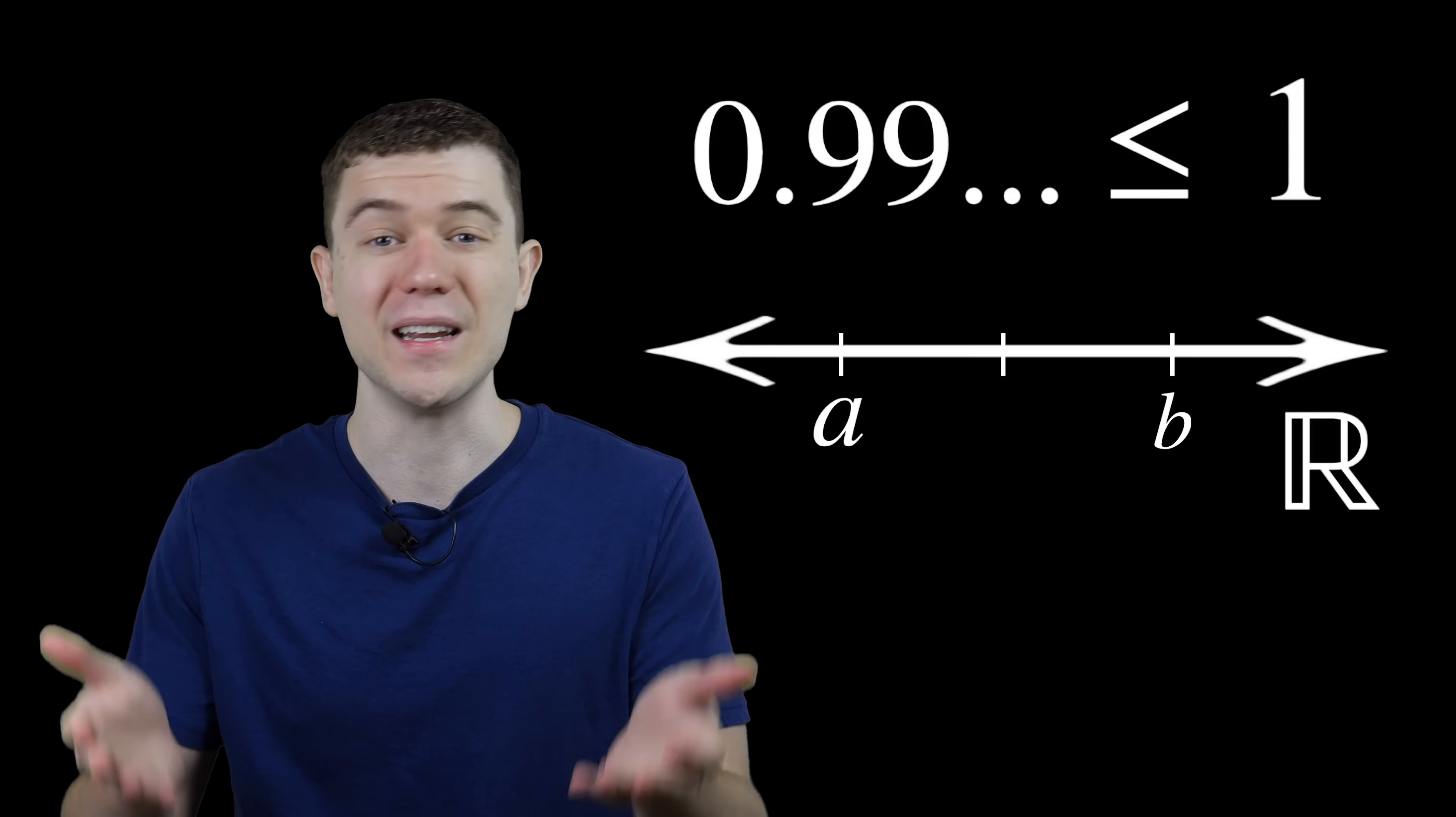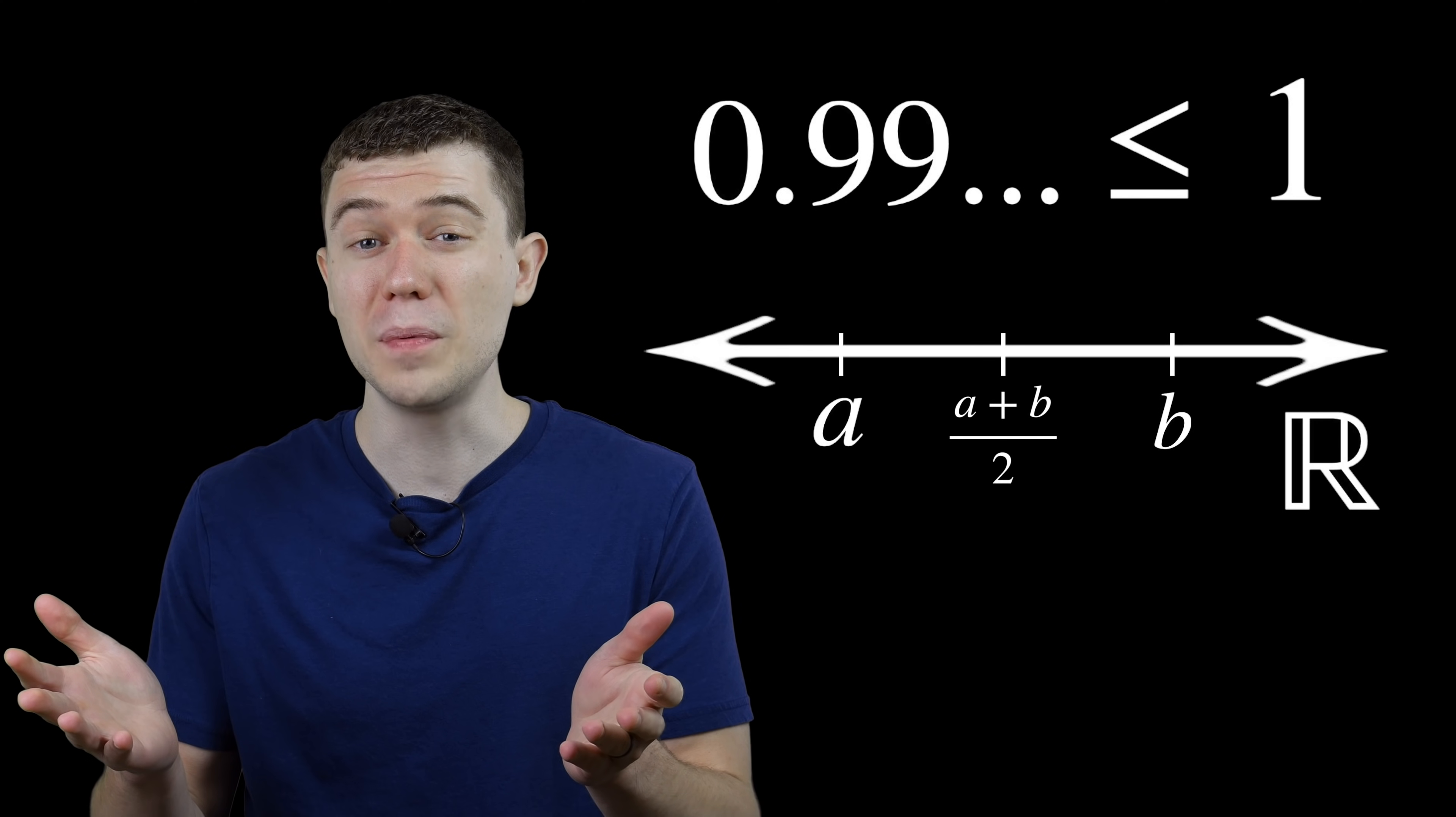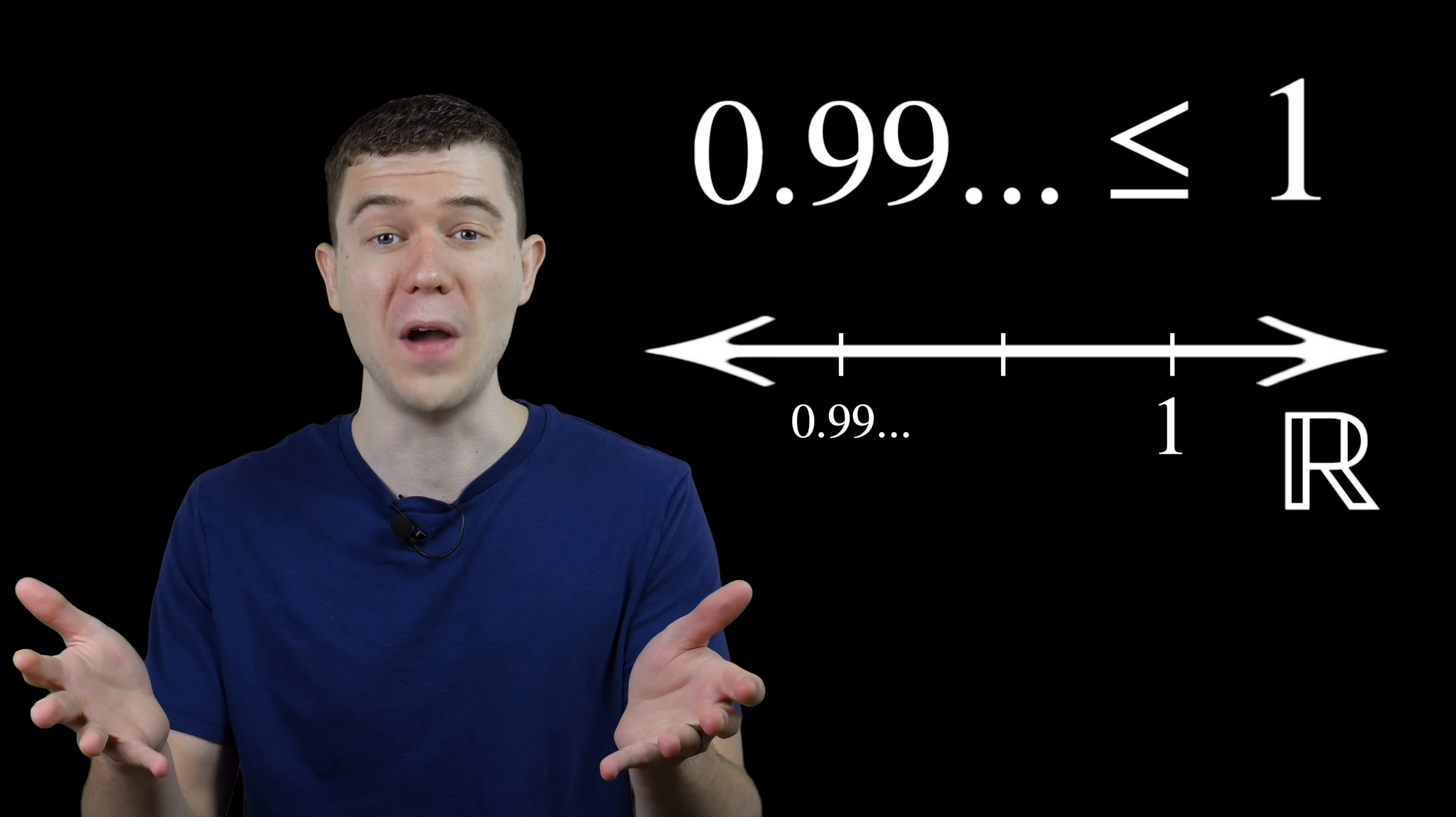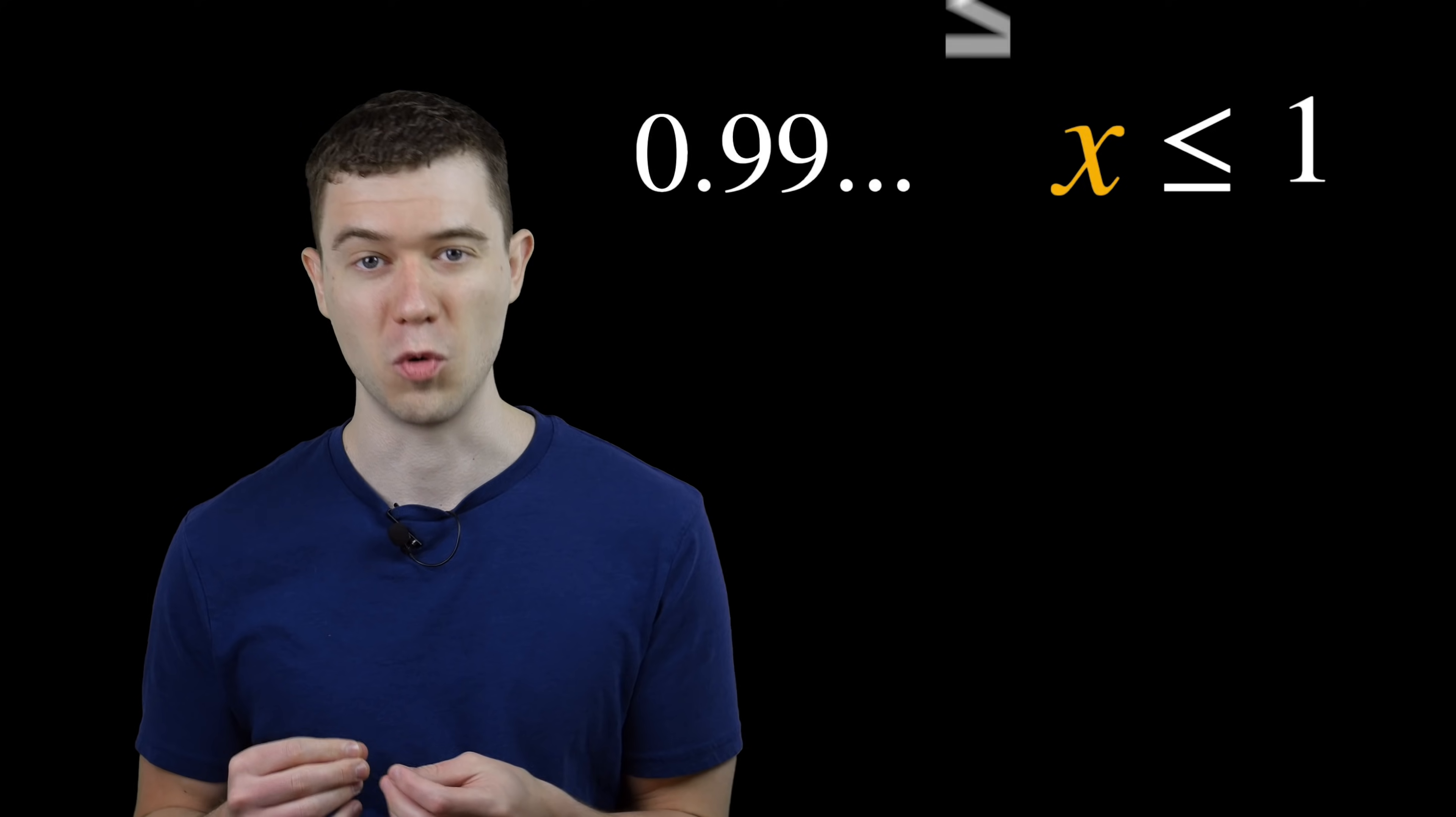An easy way of doing that is taking the average of the two distinct numbers. So if 0.9 repeating and 1 are two distinct real numbers, they're not equal. Well, there has to be some value we can fit between them. Let's just call it x and now we have this inequality.